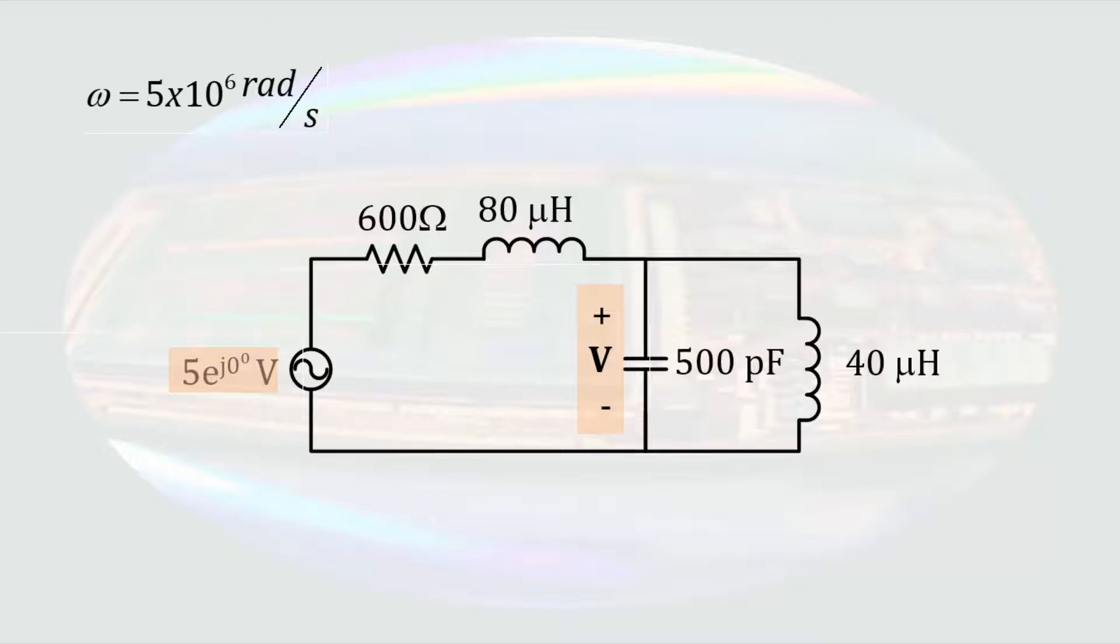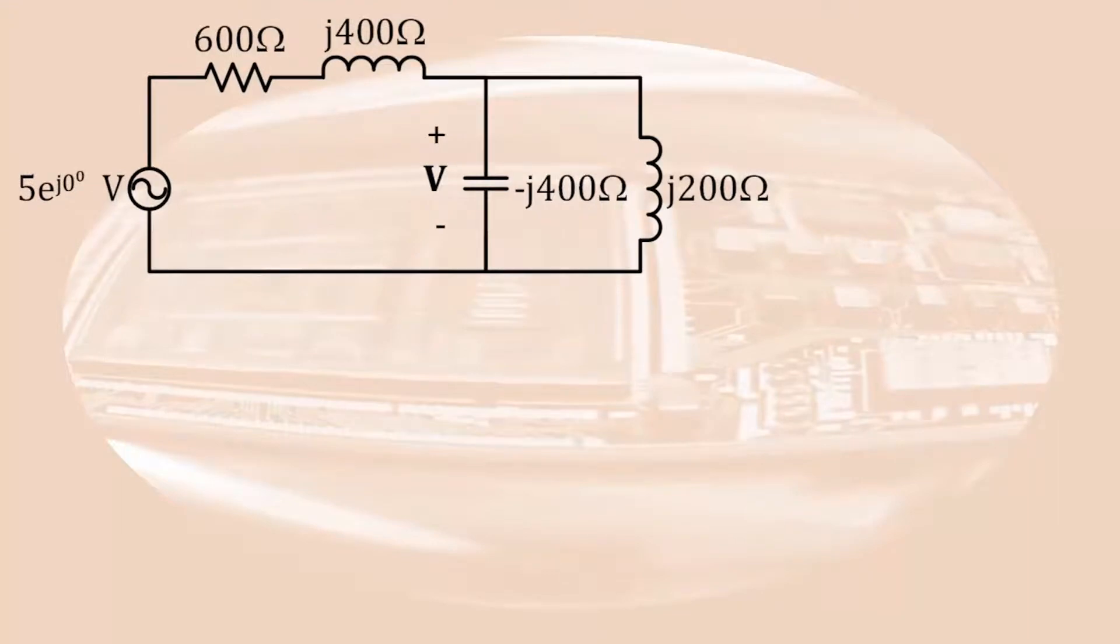Resistance does not change when converted to the phasor domain, so that will remain 600 ohms. The impedance of an inductor is J times the angular frequency times the inductance, so we will get J400 ohms for the top inductor. The impedance of a capacitor is 1 over J times the angular frequency times the capacitance, so we will get minus J400 ohms for the impedance of the capacitor. The impedance of the right-hand inductor will be calculated the same way as the top one. In this case, the result will be J200 ohms. Now we have all our quantities for the circuit in the phasor domain.